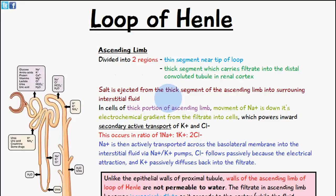Welcome to 5-Minute School. Today's video we're going to be talking about the loop of Henle, which is a part of the nephron. The last few videos we've been talking about the proximal convoluted tubule, and the loop of Henle is the part of the nephron which is after the proximal convoluted tubule.